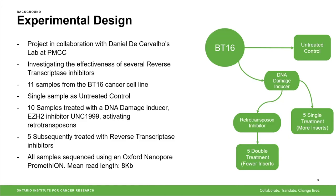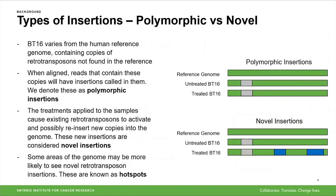All of these samples were then sequenced using an Oxford Nanopore PromethION, giving us a mean read length of about 8,000 base pairs. There are variations in BT16 compared to the human reference genome, so BT16 contains copies of retrotransposons not found in the human reference genome. When aligned, reads that contain these copies will have insertions in them that we denote as polymorphic inserts, highlighted in gray in the figure on the right.